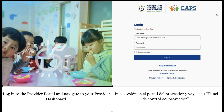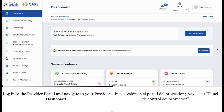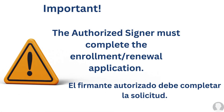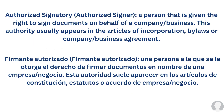Log into the provider portal and navigate to your provider dashboard. Before you begin, it's important to note that the authorized signer must complete the enrollment renewal application. An authorized signer is a person that is given the right to sign documents on behalf of a company or business. This authority usually appears in the Articles of Incorporation, Bylaws, or Company Business Agreement.